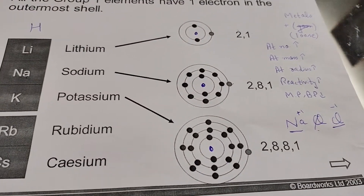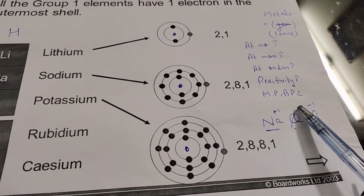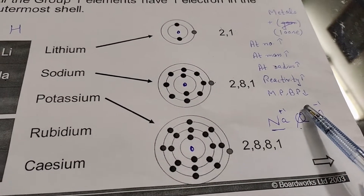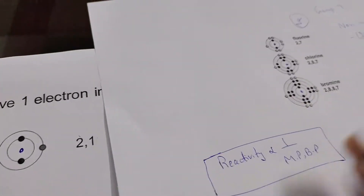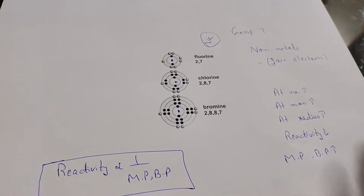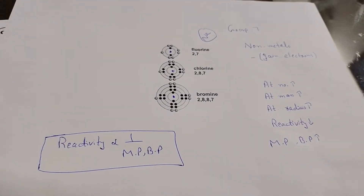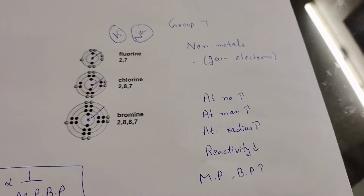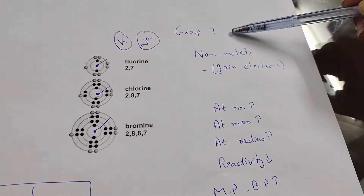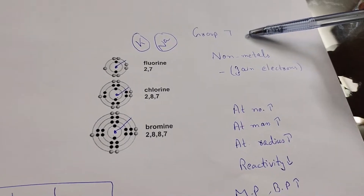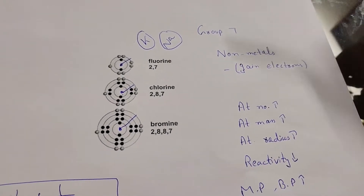As we move downwards, reactivity increases and melting point and boiling point decrease, because reactivity and melting/boiling point are inversely proportional to each other.